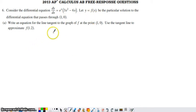Part A here wants us to write an equation for the line tangent to the graph of f at 1, 0, and then use that tangent line to approximate f of 1.2.